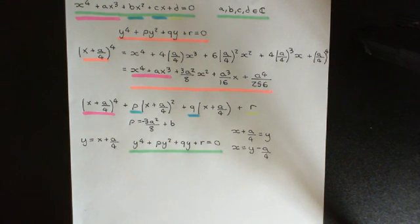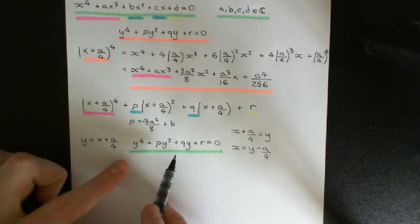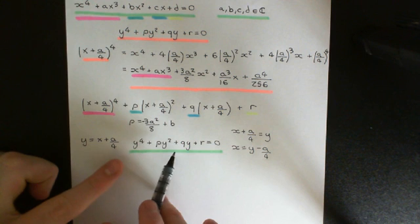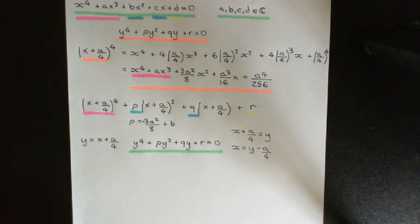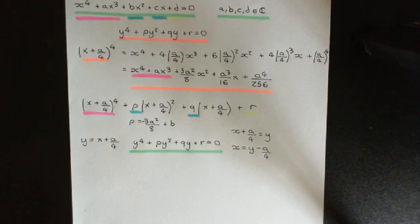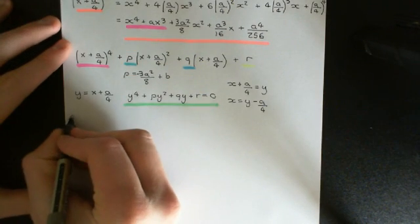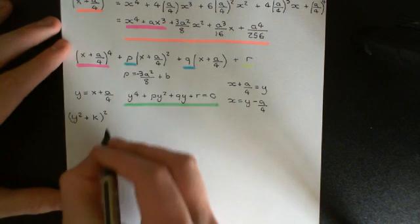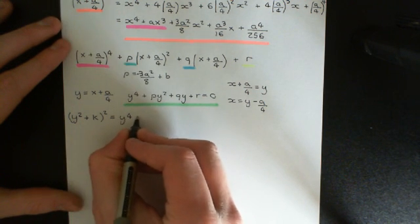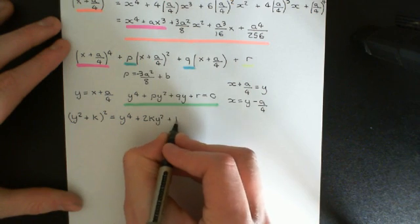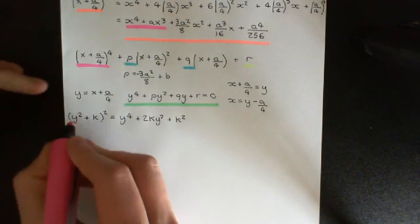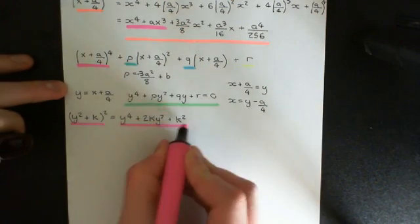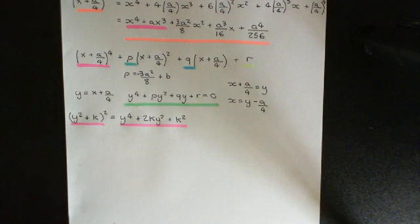Now we need to solve this depressed quartic. First some background: consider expanding (y² + k)², which gives y to the power of four plus 2ky² plus k². Here k is just some arbitrary complex number that we have not yet chosen — we have freedom to pick it, and that will be really important later.